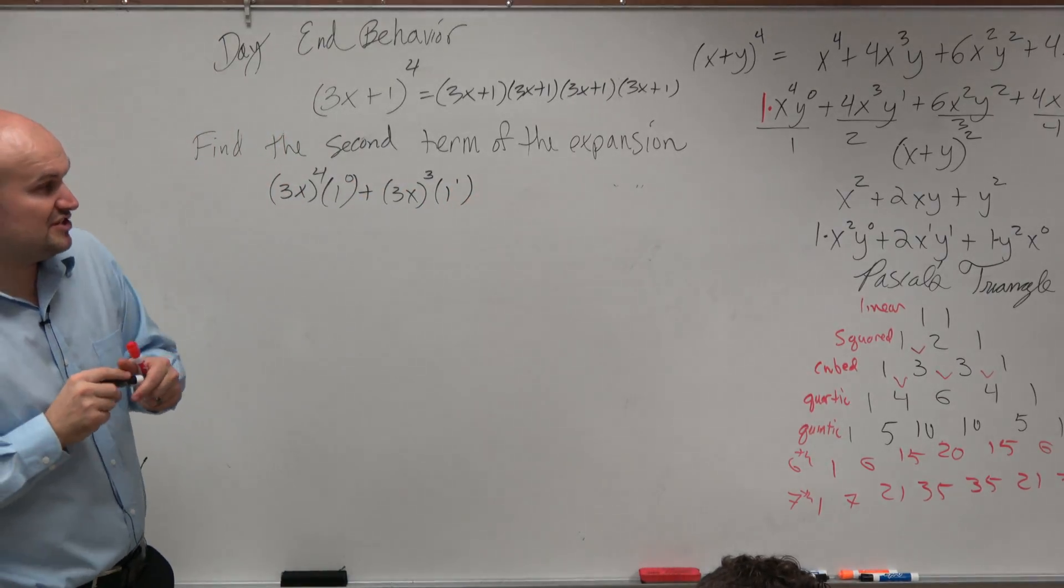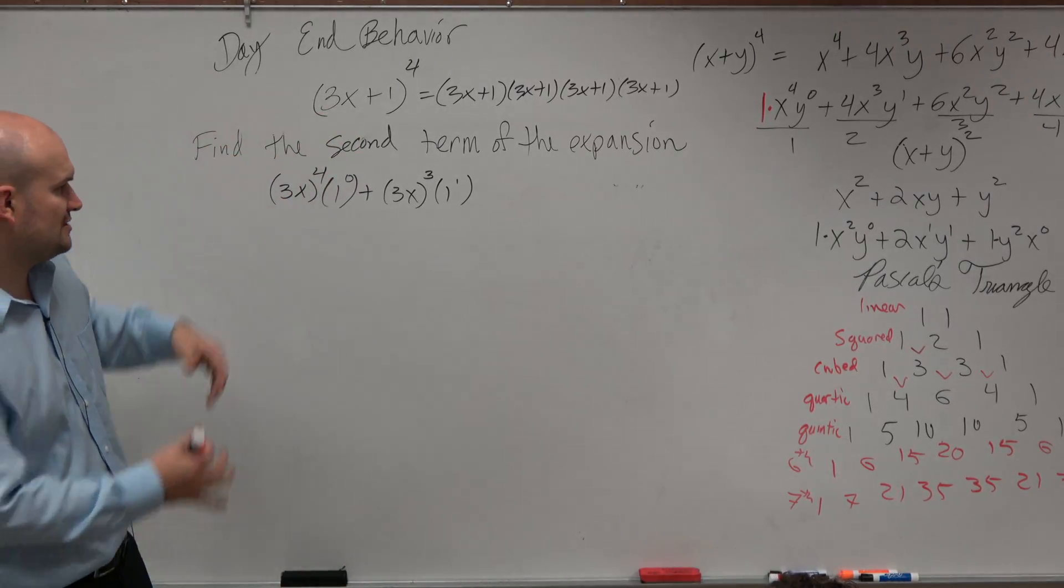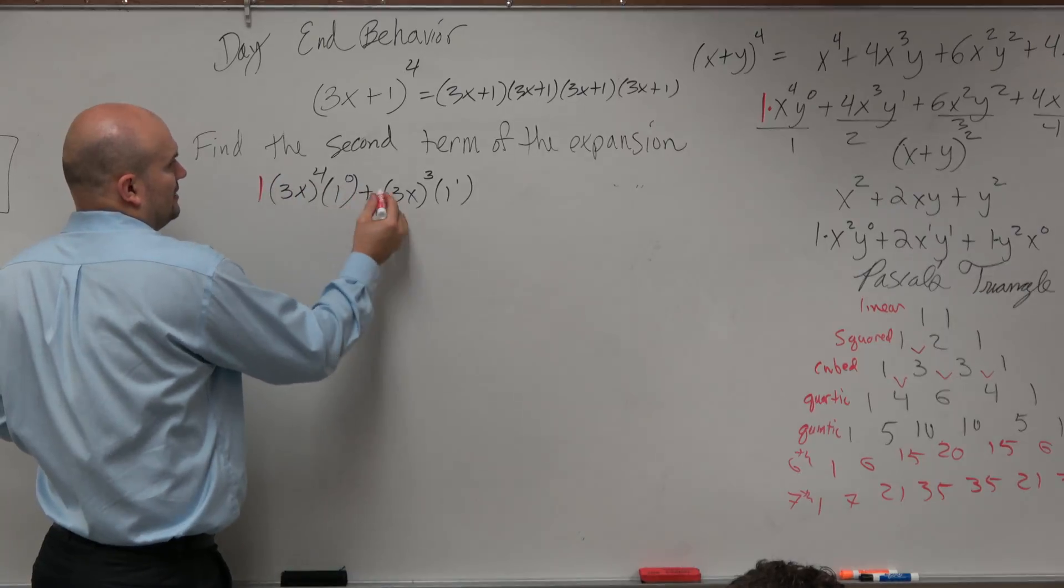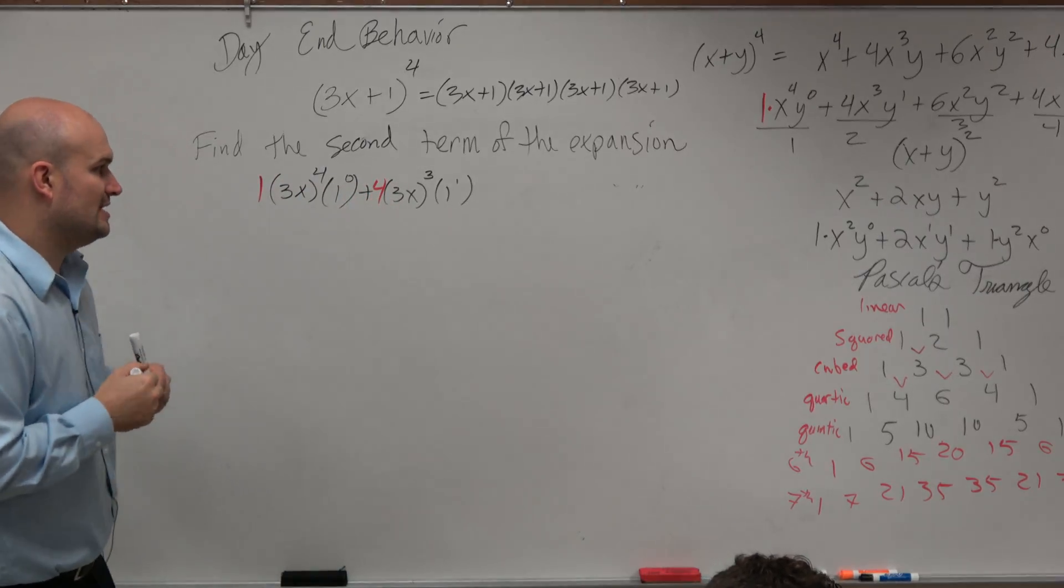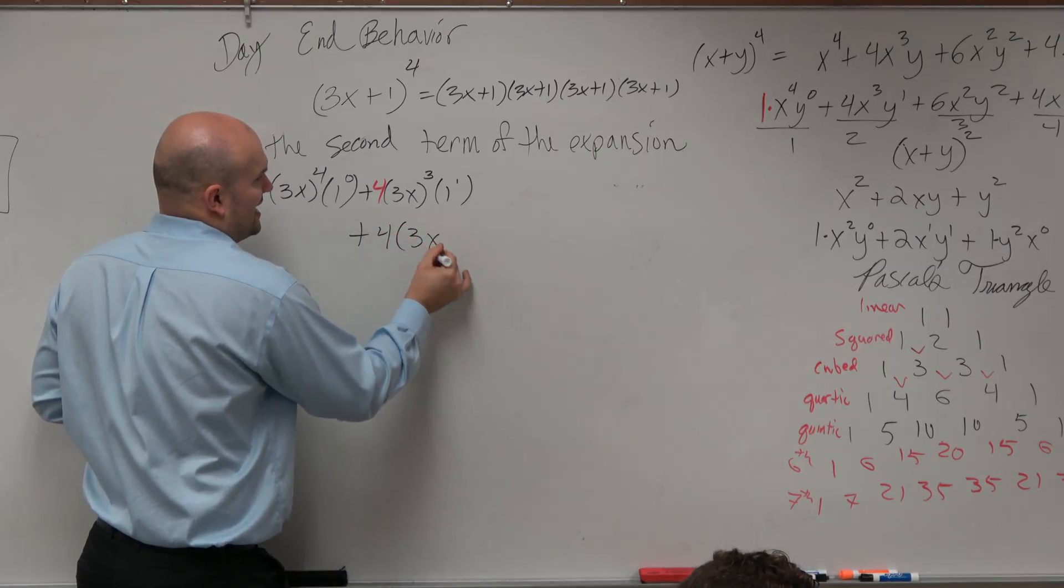Now, let's look at the coefficients. Applying Pascal's triangle, if I go down to the quartic row, I'm looking at 1 and 4. So now, really what I need to do is plus 4 times 3x cubed.